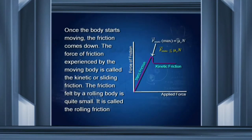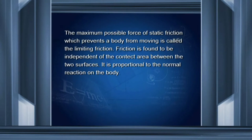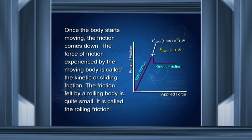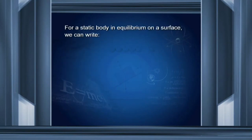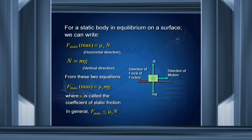The force of friction increases up to a maximum point — this is called the force of static friction. The maximum force just before the body moves is given by the coefficient μs times N, where N is the normal reaction. For a static body in equilibrium, F_static_max = μs·N = μs·mg. Therefore, F_static is always less than or equal to μs·N.